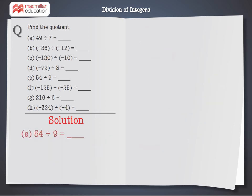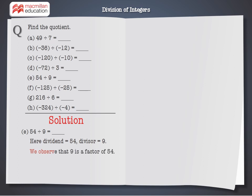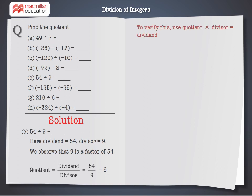E: 54 divided by 9. Here, dividend is equal to 54, divisor is equal to 9. We observe that 9 is a factor of 54. Quotient equals dividend divided by divisor, that is 54 divided by 9, which is equal to 6. To verify: quotient multiplied by divisor equals dividend — 6 multiplied by 9 is equal to 54. Therefore, quotient is equal to 6.